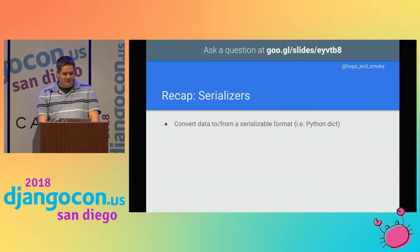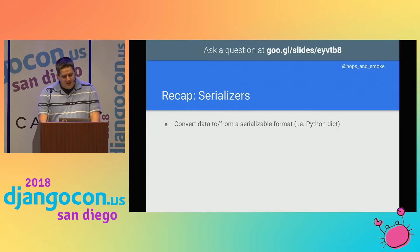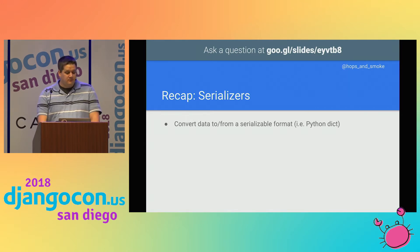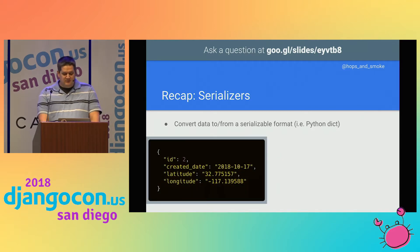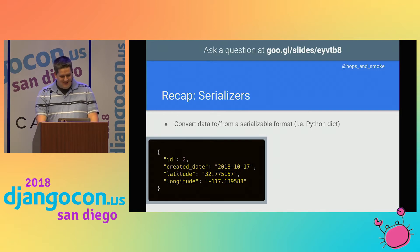A quick recap on serializers. These are probably the most powerful thing in DRF. They're responsible for converting your data between the Django instances you know and love and formats which can easily be transferred over the web, like JSON or XML. Or you can write your own renderers if you feel like doing something unusual. They delegate that responsibility to the individual fields defined in your serializer classes, using the to_internal_value and to_representation methods to convert to and from serializable types, respectively. A quick tip: if you're using coordinates in your models but don't actually have GeoDjango installed, make sure you save them as decimal fields — otherwise you'll lose data to rounding errors. And also, JSON does not have a decimal object, which is why you see them as strings.